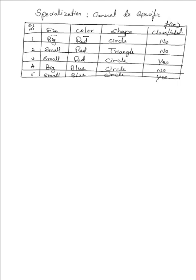Now, how do we solve this problem? The specialization method always starts from a general to specific hypothesis. We start with our general hypothesis H0. We have three attributes: size has instances big and small, color has red and blue, and shape has circle and triangle.